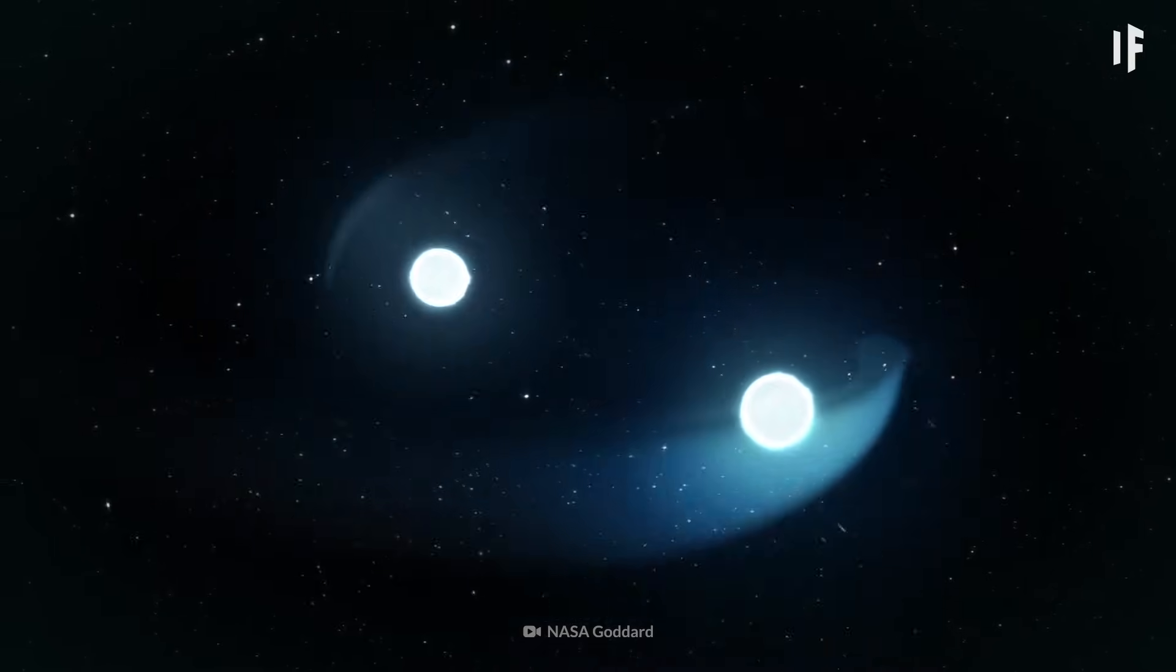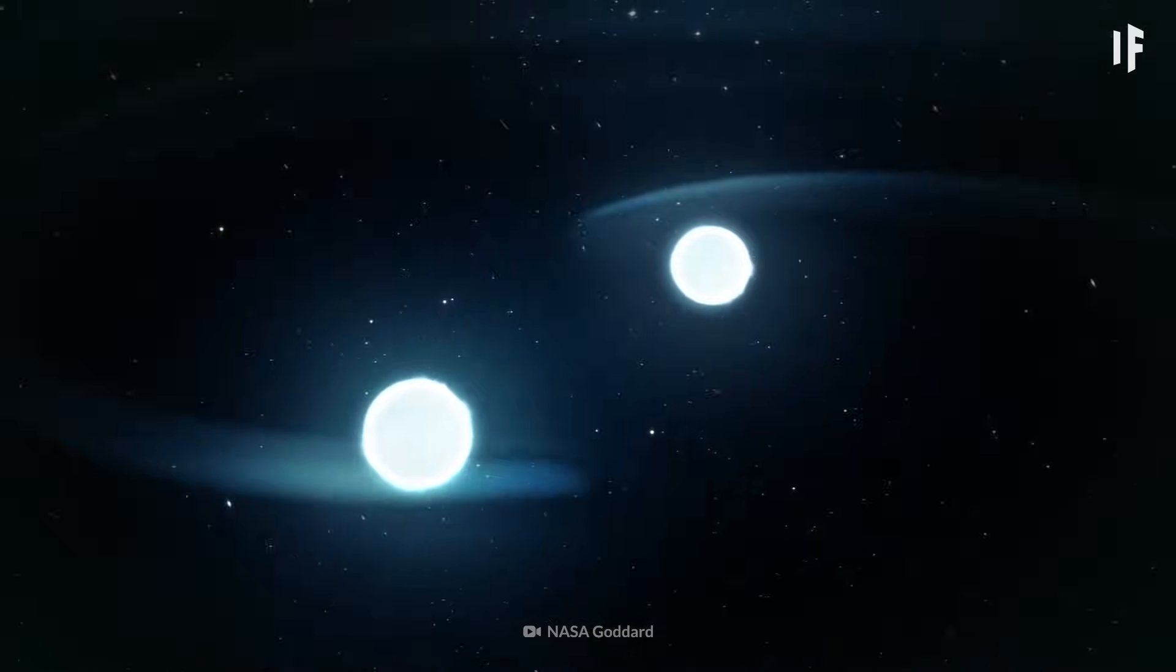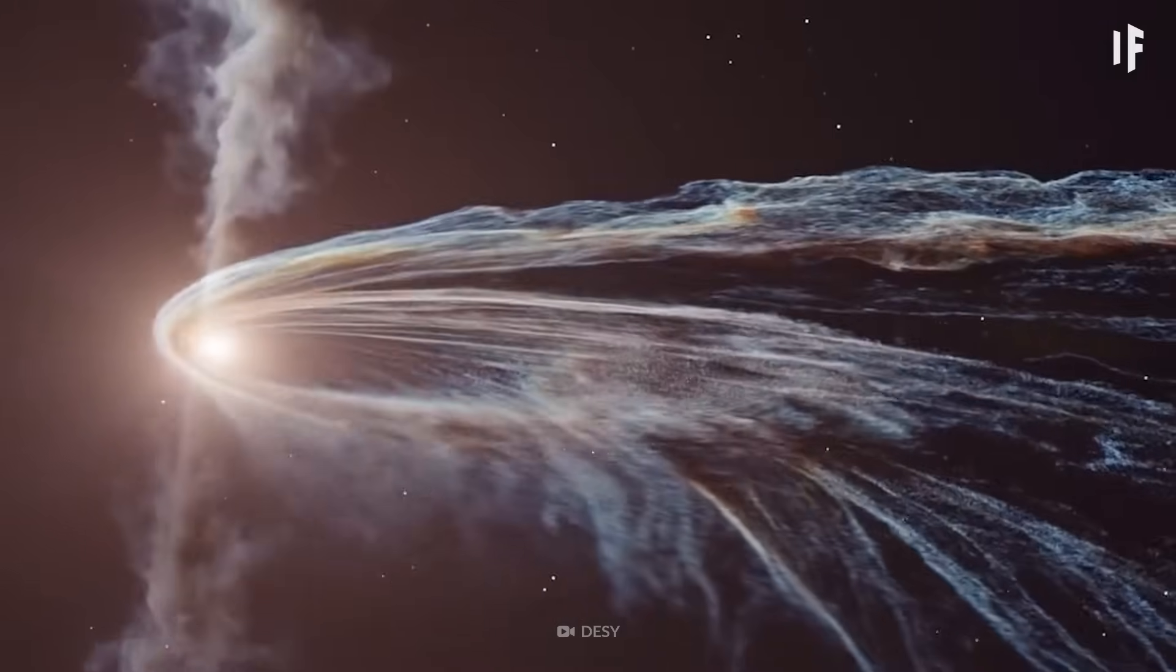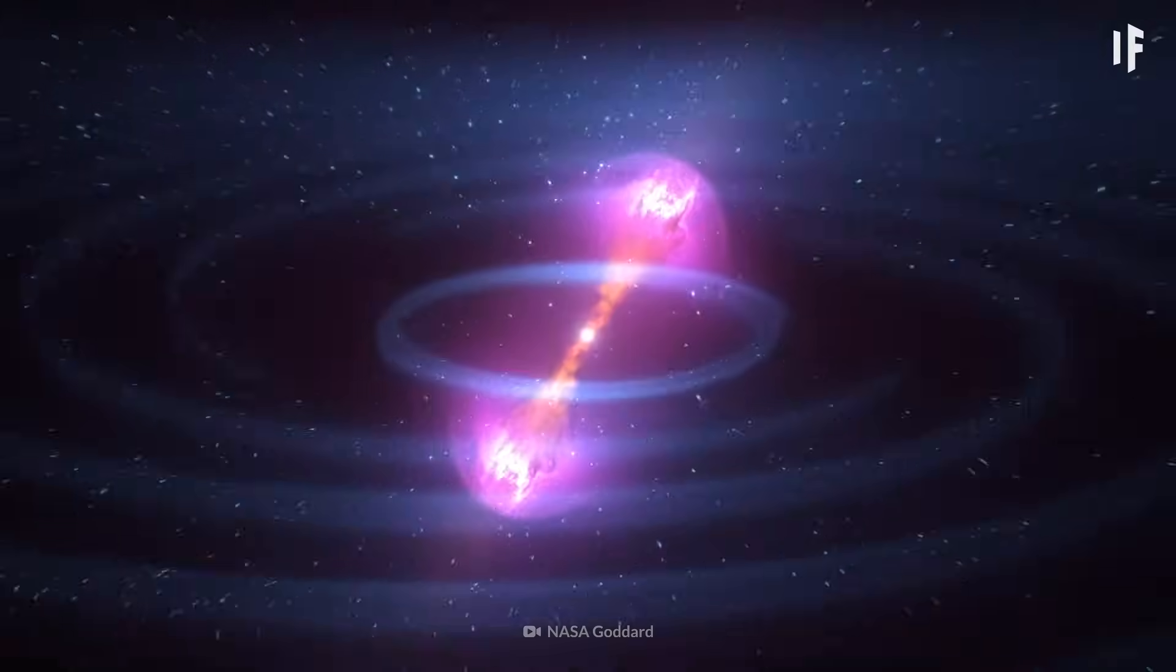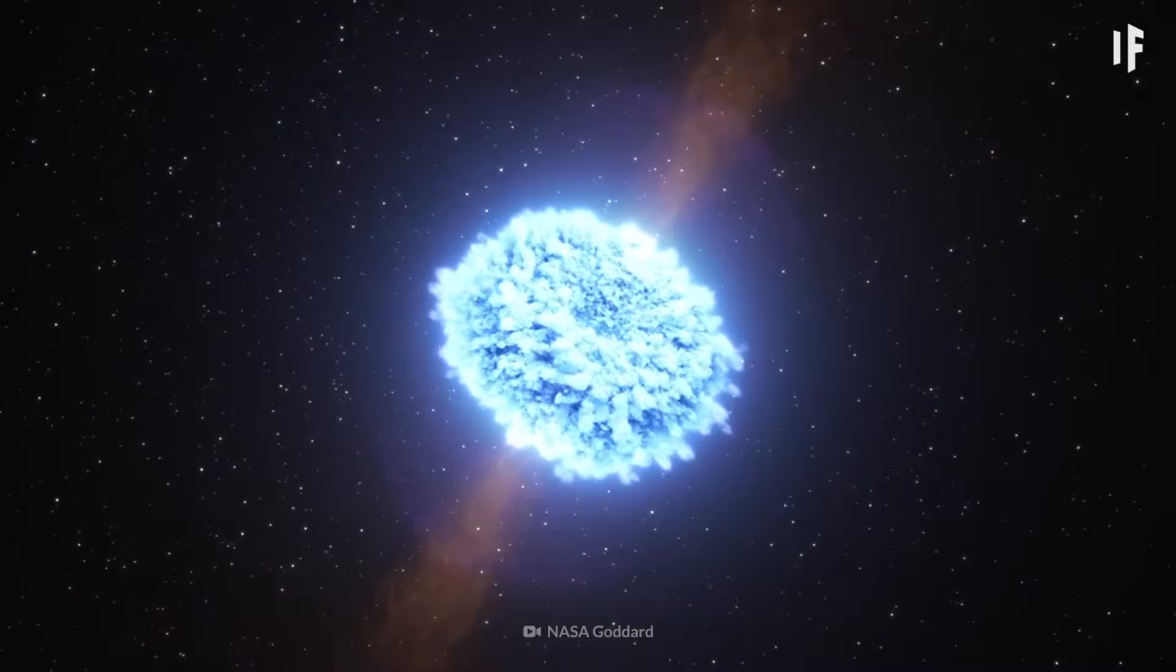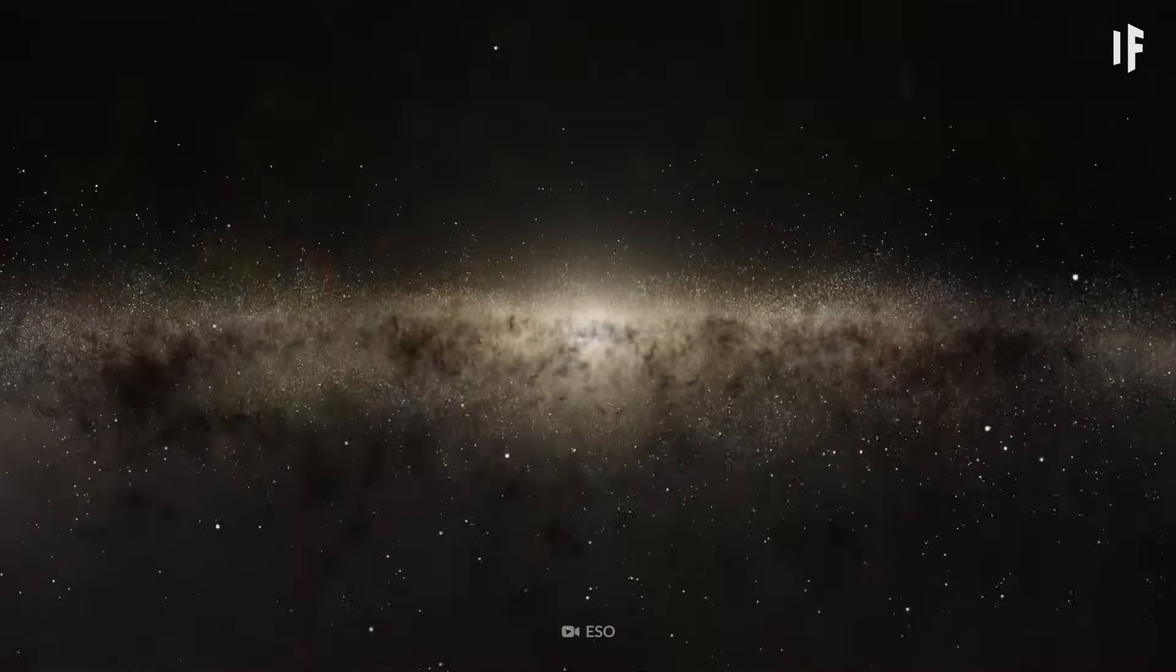These stars don't like to chill in space by themselves. They want to group together. And it just so happens that when these stars, along with other particles like gas, dark matter, and dust, group together due to gravitational forces, they form galaxies. Yeah, galaxies like the Milky Way and Andromeda were formed in this way. But that won't be for a couple more billion years.